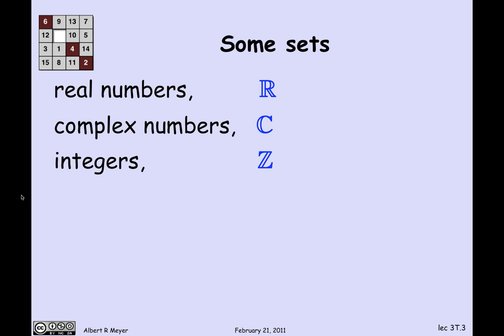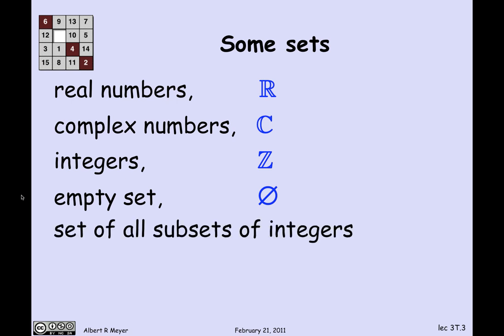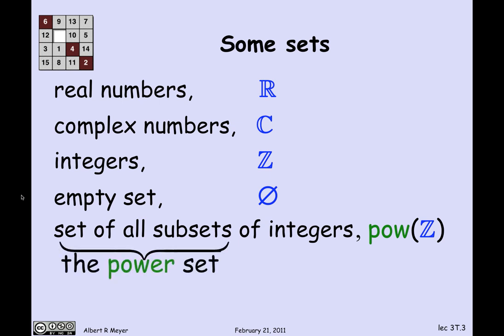We've already referred to a bunch of familiar sets: the real numbers, the complex numbers, the integers, with their corresponding single-letter abbreviations in blue. There's also the concept of the empty set — the idea of a set with nothing in it, kind of like a zero with respect to sets. Another important operation is the power set: taking all subsets of the integers — like the even numbers, odd numbers, or prime numbers — and collecting them into a single big set called the power set of the integers.